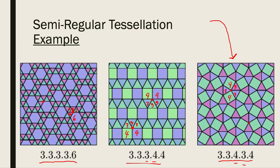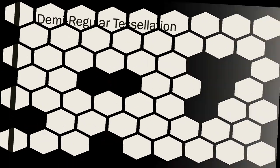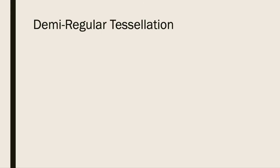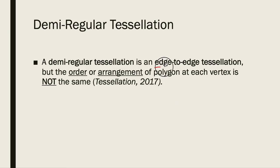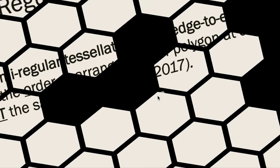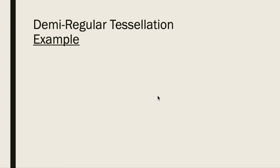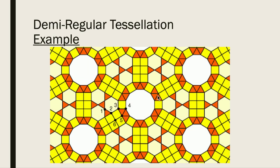Now let's look at demi-regular tessellations. A demi-regular tessellation is an edge-to-edge tessellation, but the arrangement of polygons at each vertex is not the same. Here we have one example with multiple vertices that each have different names, which is what distinguishes it.